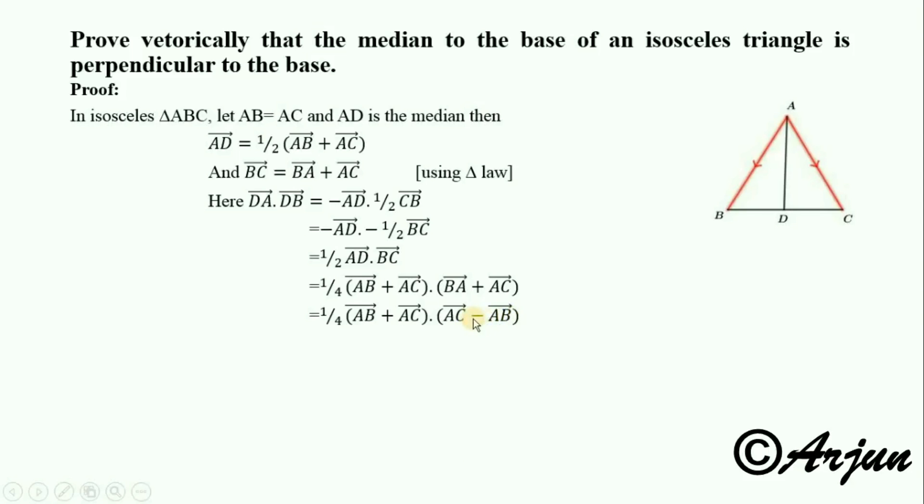With the negative vector, minus AB. This is in the form A plus B times A minus B, giving AC square minus AB square. AC square equals AC dot AC, and AB square equals AB dot AB. This becomes one-half times AC vector square minus AB vector square.